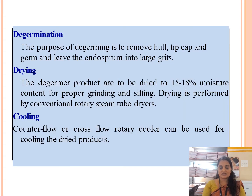The next step is de-germination. The purpose of de-germing is the removal of the hull, tip cap, and germ, and to leave the endosperm in large pieces. In the de-germination process, the germ is removed from the corn kernels.